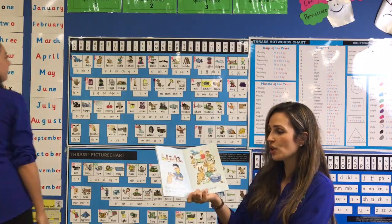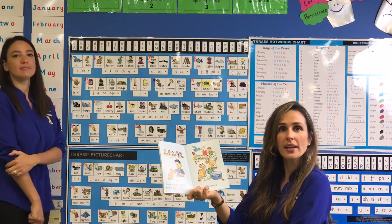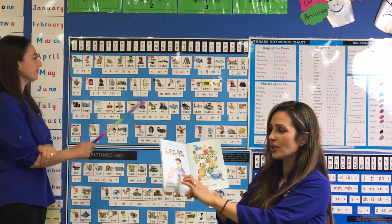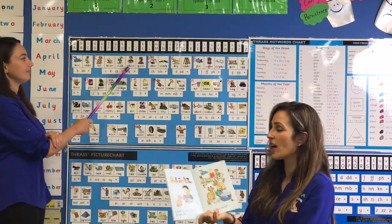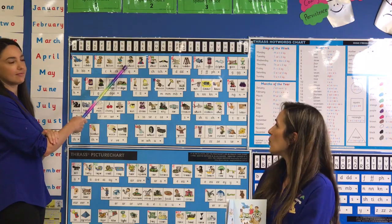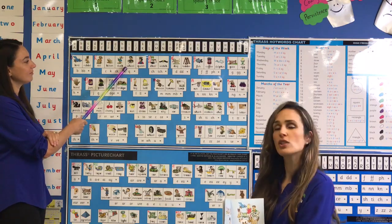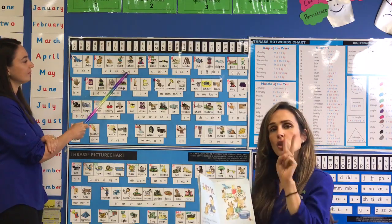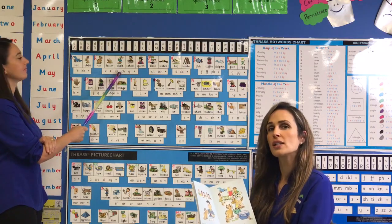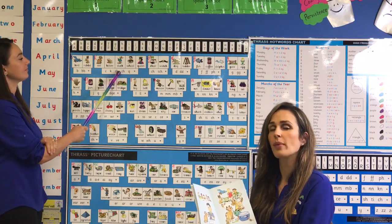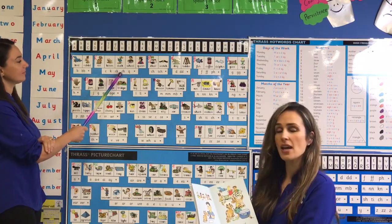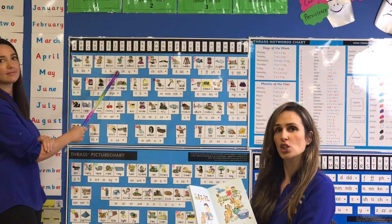I took my cat to school for pet day, and 'school' is on our Thrass chart in the same K box, but in the word 'school' we have a digraph — two letters making one sound — and the two letters in 'school' that make the K sound are C and H.